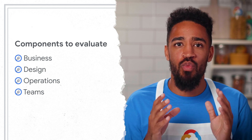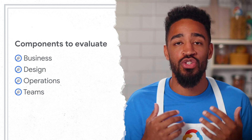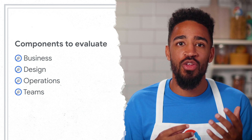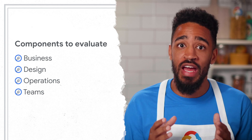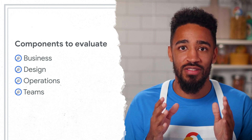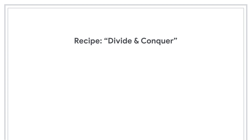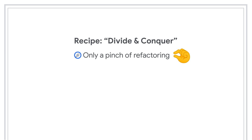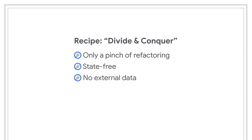Choose teams that have well-defined processes to lead the initial efforts, because you want them to lead the way for this migration journey and understand that they will encounter new challenges for which they must find solutions. Taking all these factors into account, this recipe calls for a divide and conquer approach, where we find challenging but meaningful features. The ideal feature requires little refactoring, is stateless, has no external data requirements, and has few or no dependencies.